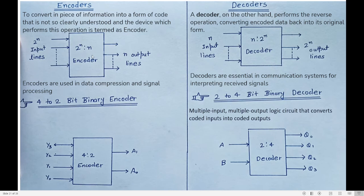This encoder will have two parts: n input lines and n output lines. For example, if you have four input lines, two to the power of n is two to the power of two, so n is two, and you will have n output lines. So an encoder is a circuit which will have two to the power of n inputs and n outputs.